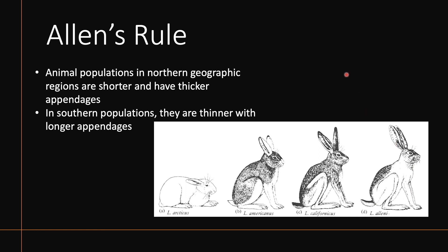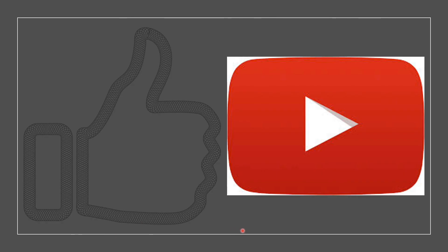The explanation for Allen's rule also has to do with the loss of heat, just like Bergmann's rule. The southern rabbit can afford to lose more heat, so it has a higher surface area to volume ratio compared to the northern rabbit, which wants to preserve its heat in the north.